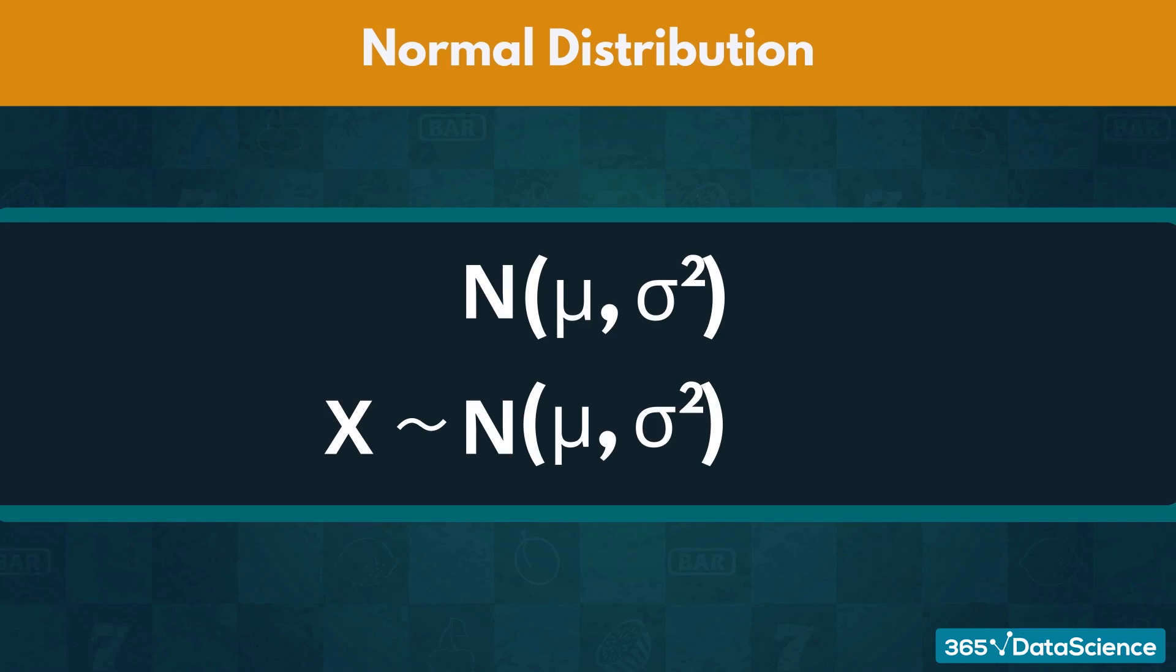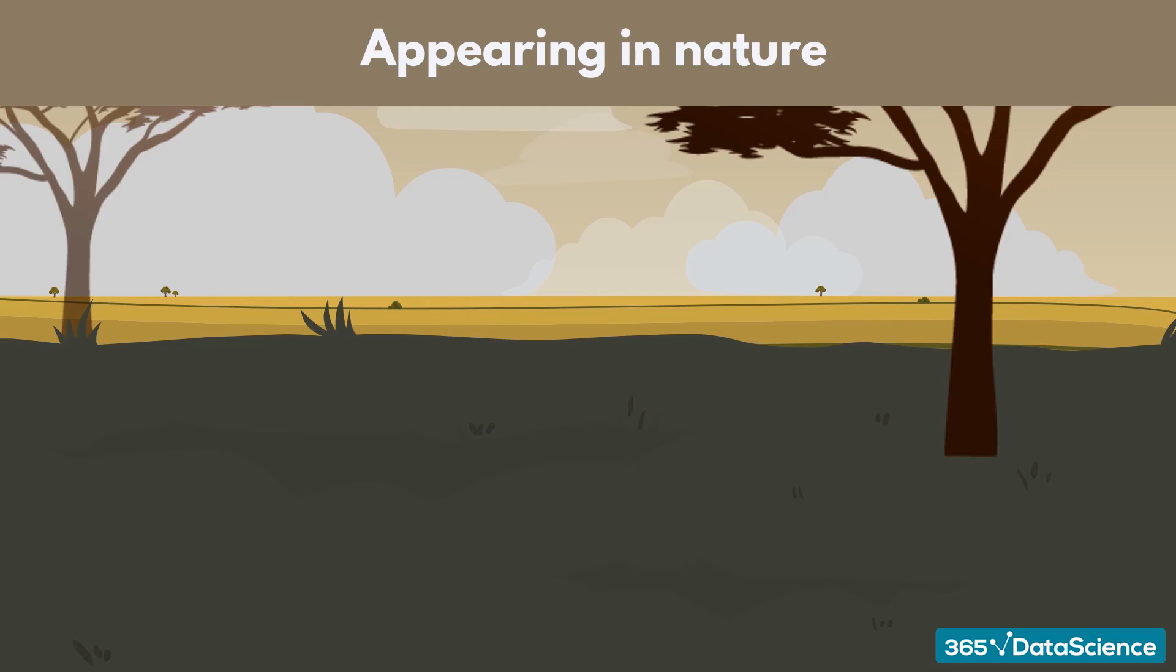When dealing with actual data, we would usually know the numerical values of mu and sigma squared. The normal distribution frequently appears in nature, as well as in life, in various shapes and forms.